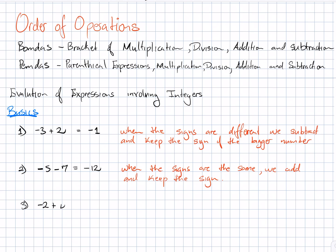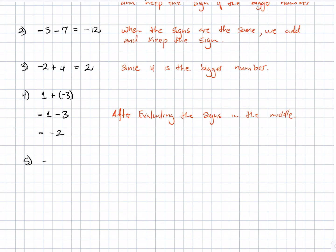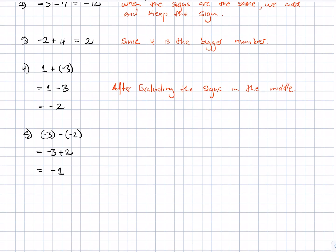Example 3: negative 2 plus 4 equals 2. Since 4 is the bigger number, we subtract 2 from 4 to get 2, and we keep the sign of 4, giving positive 2. Example 4: 1 plus negative 3 equals 1 minus 3, which equals negative 2, after evaluating the signs in the middle. Example 5: negative 3 minus negative 2 — since both signs in the middle are negative, we change that to a positive, giving negative 3 plus 2, which equals negative 1.